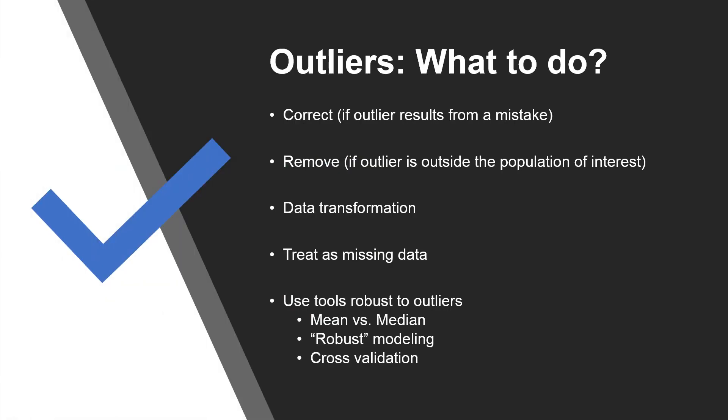What should we do about outliers? There's no single solution here. If an outlier is the result of data recording errors, we should correct the error if possible. If an outlier is outside of the population of interest, we should simply remove the outlier from further analysis. One should be cautious when removing outliers as removing them can sometimes dramatically change the result of subsequent analysis.